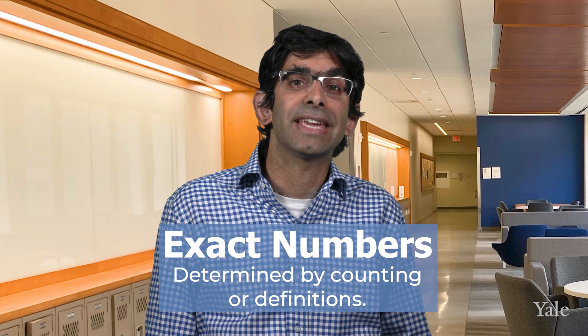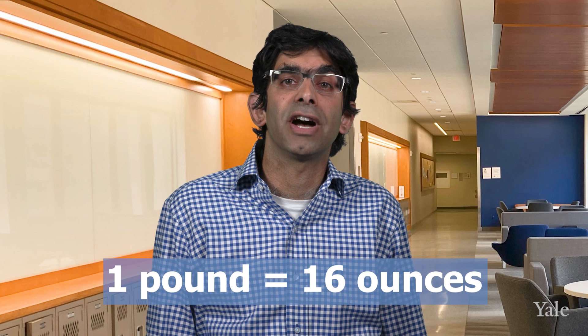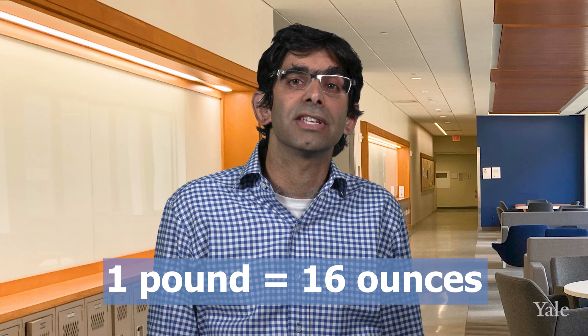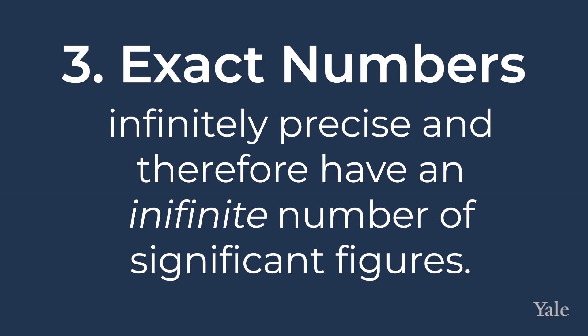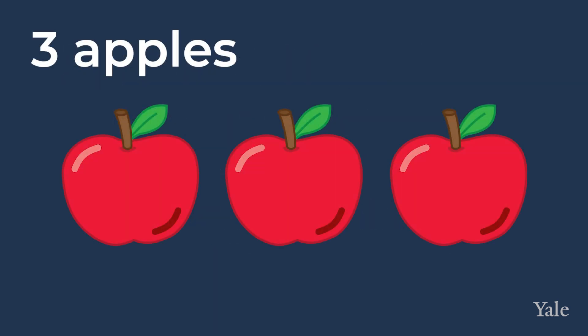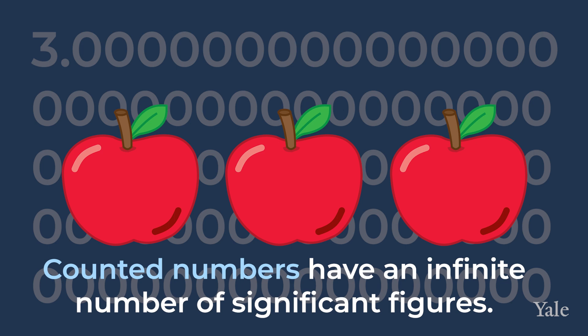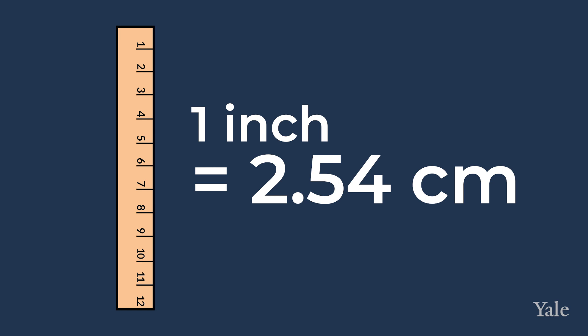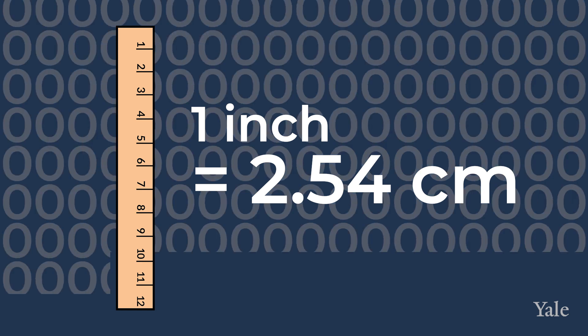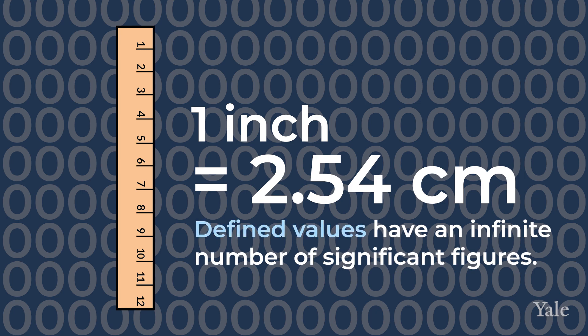Finally, let's talk about exact numbers. Exact numbers are determined by counting or definition. For example, a pound is defined as 16 ounces, so 16 in that case is an exact number. You could also count that you have two friends, so two would be an exact number. For the purposes of significant figures, exact numbers are infinitely precise and therefore have an infinite number of significant figures. For instance, three apples equals three with an infinite number of zeros, and one inch equals 2.54 centimetres with an infinite number of zeroes, because it is a defined value.